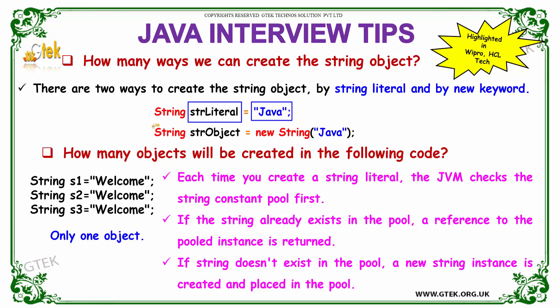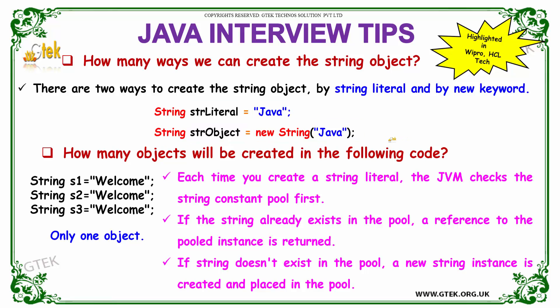The second method is using the new keyword. The statement is: str_object = new String('java'). This is the syntax for using the new keyword to create a string object.